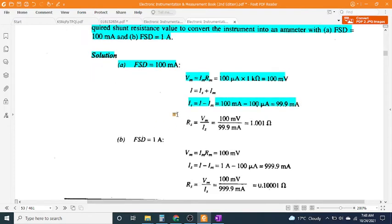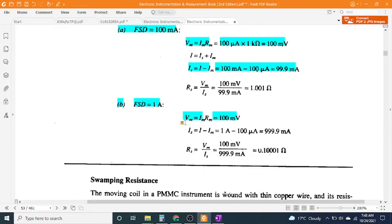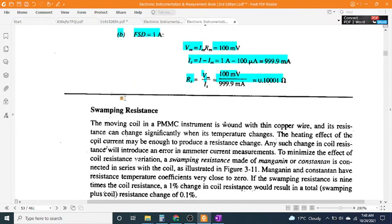Part B, FSD = 1 A: V_M = I_M × R_M = 100 mV. I_S = I - I_M = 1 A - 100 μA = 999.9 mA. R_S = V_M / I_S = 100 mV / 999.9 mA = 0.1001Ω.